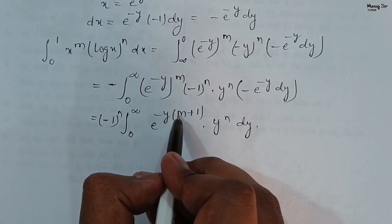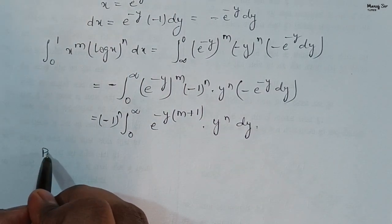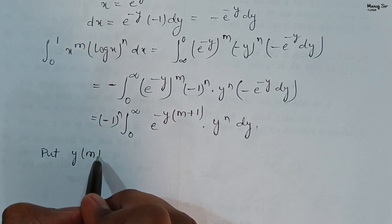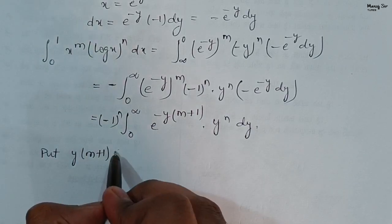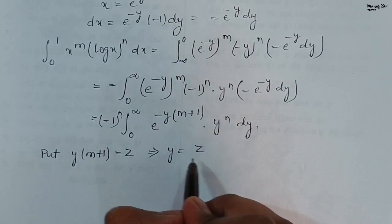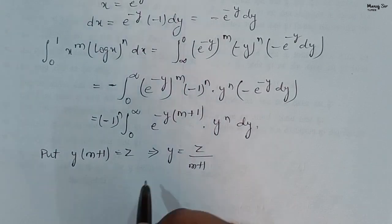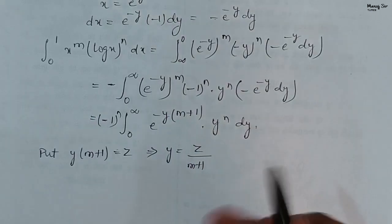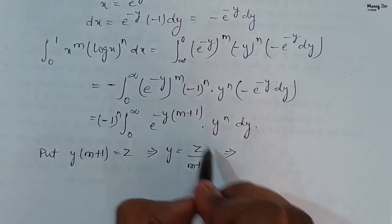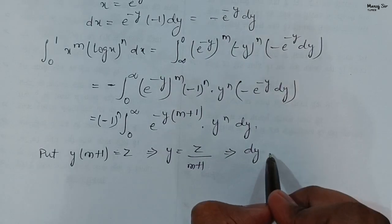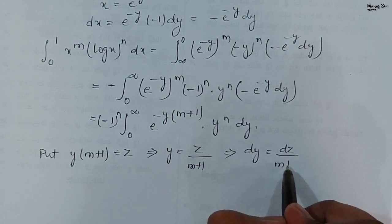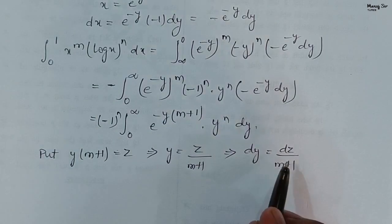Now we apply a second substitution: let y times (m+1) equal z, so y equals z upon (m+1). Differentiating gives dy equals dz upon (m+1).